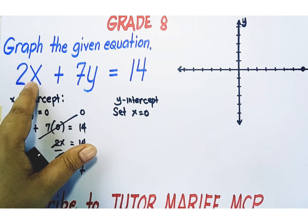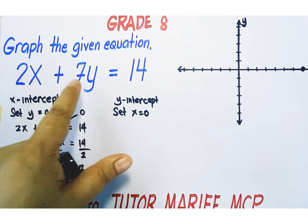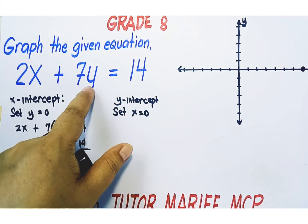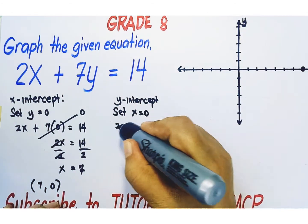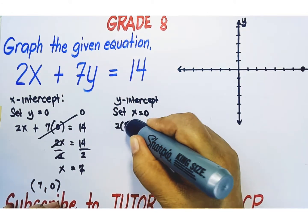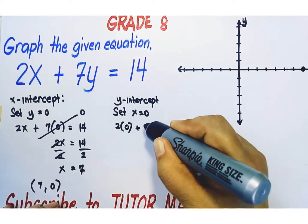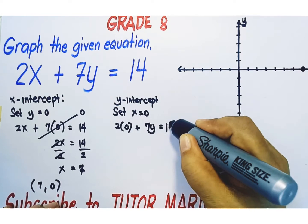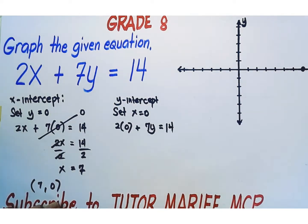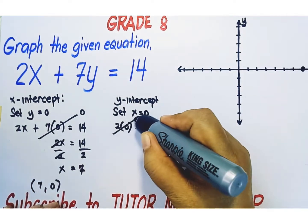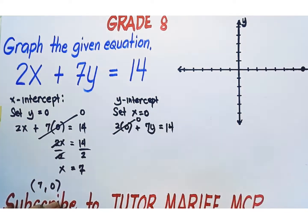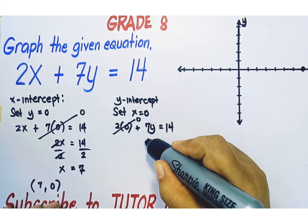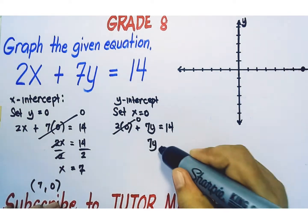Replace x with zero and solve for the corresponding y-coordinate. 2 times zero plus 7y equals 14. Any number multiplied by zero is always equal to zero, so the left side becomes 7y.